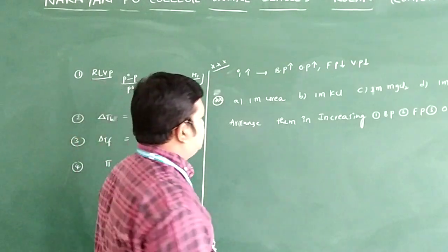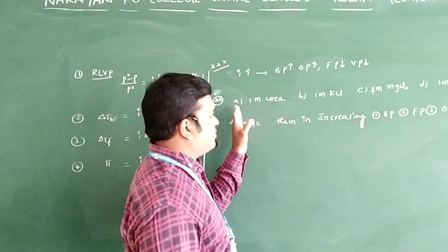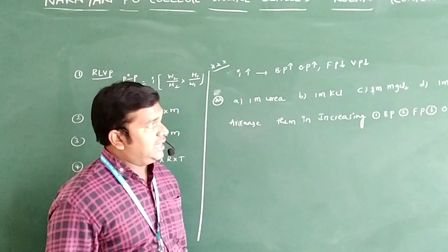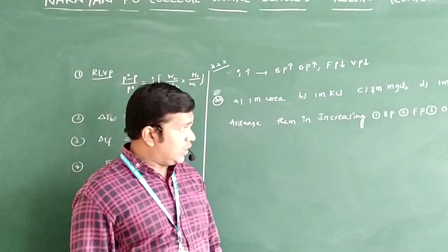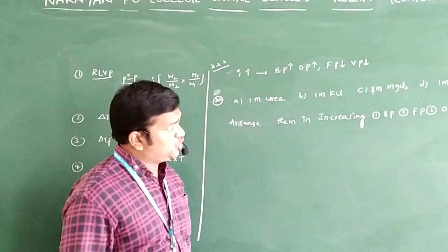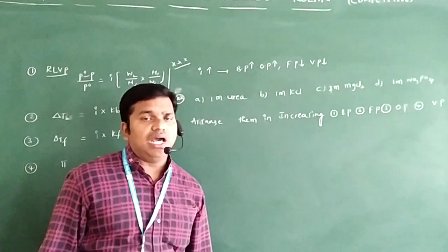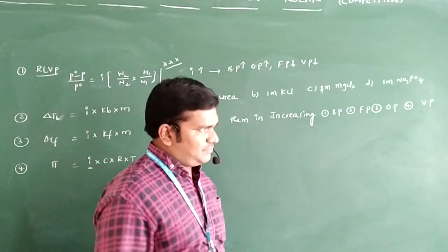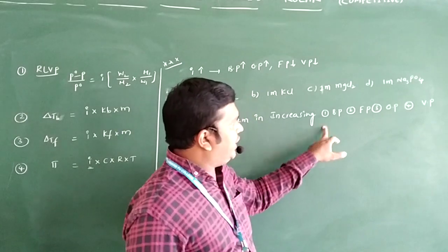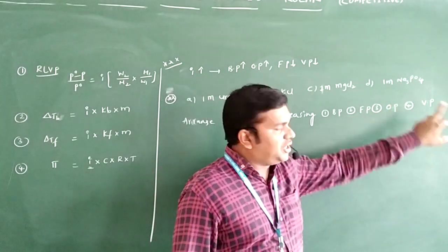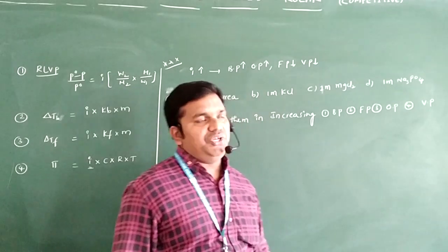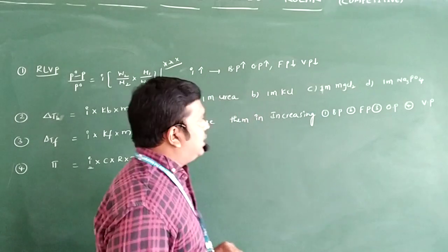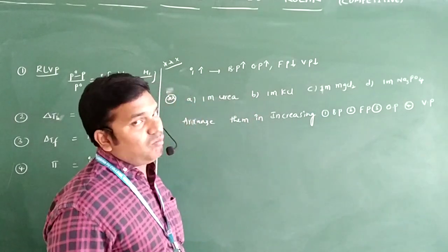Let's see a question. The data given is: option A — 1 molar urea, option B — 1 molar KCl, option C — 1 molar MgCl₂, option D — 1 molar Na₃PO₄. Arrange them in increasing order of boiling point, freezing point, osmotic pressure, and vapor pressure.